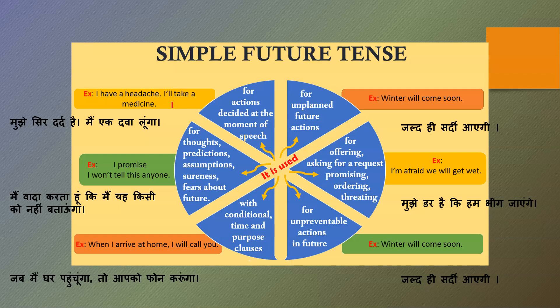Simple future tense is used for thoughts, predictions, assumptions, sureness, and fears about the future. For example, 'I promise I won't tell this to anyone.' This expresses sureness — you are giving a surety that you will not share something with anyone.